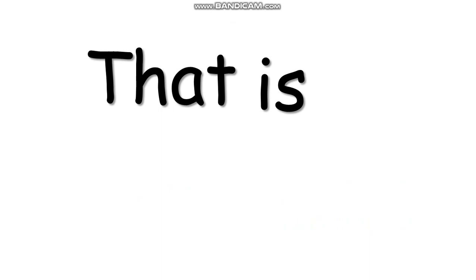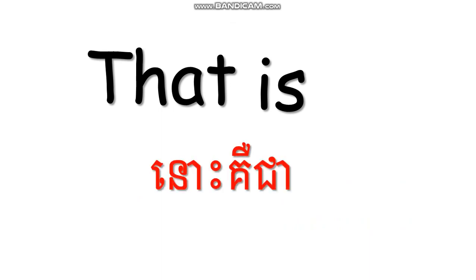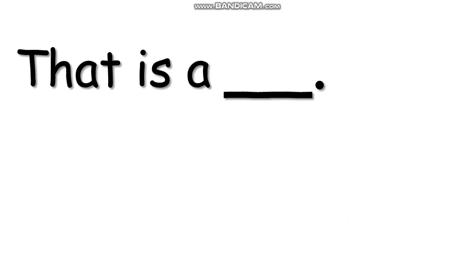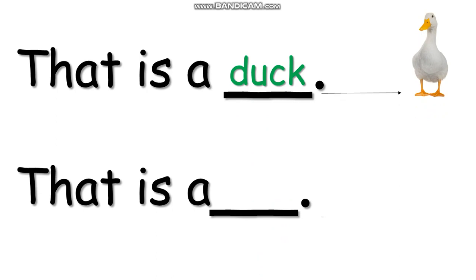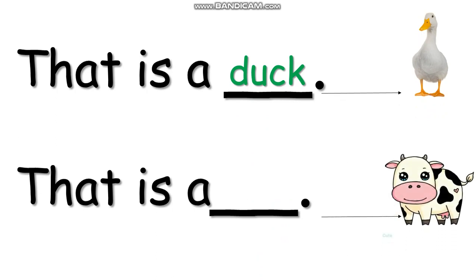Very good. This is a chicken. This is a chicken. Thank you, student. Now we continue to 'That is'. Again, 'That is'. I translate it for you. Can you see? Very good. Now let's see the example. 'That is'... can you see? Long arrow. Can you tell me, what is that? Yes, good. That is a duck. That is a duck. The next one — that is a... Can you tell me what is that? Good. That is a cow. That is a cow.